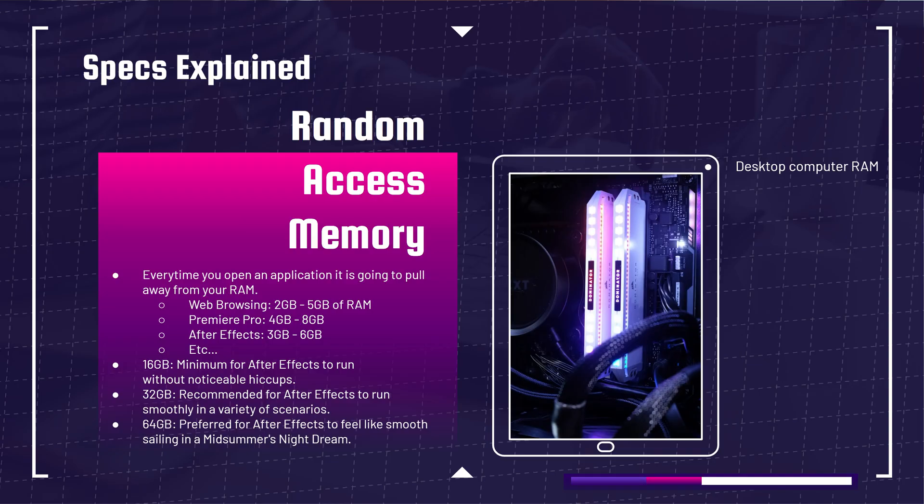RAM — how does it work and how much do you need? Adobe requires a minimum of 16 gigs and recommends 32. Every time you open an application it pulls from your RAM. A browser with multiple tabs and YouTube videos can use 5 gigs on its own. Then opening After Effects uses 6–10 gigs depending on project complexity. Add Photoshop for editing assets and that's another 2–4 gigs. You can see how quickly RAM adds up, and why Adobe recommends 32 gigs to make sure you don't run out.